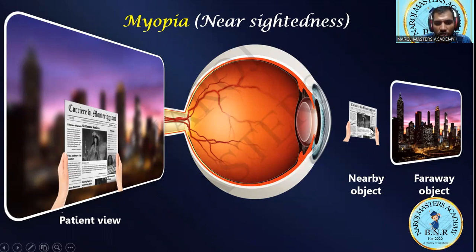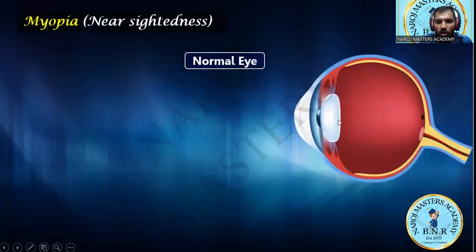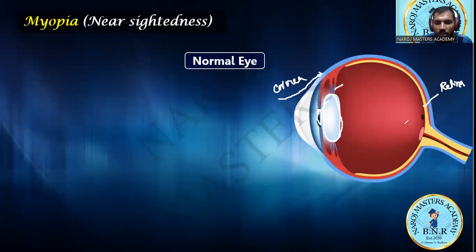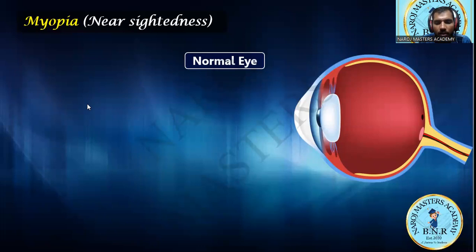Here is the human eye structure, with a near object and a far away object. Let me explain the parts again from lecture one. The outer boundary is the cornea. There is a pupil, a biconvex lens, and the retina — the portion where we get the image. There is also aqueous humor, the iris, optic nerves which transfer data, and ciliary muscles that support the lens, allowing it to expand or contract.